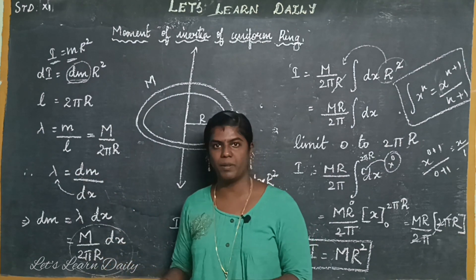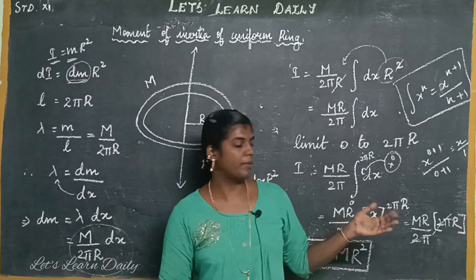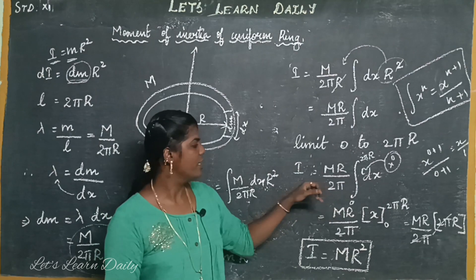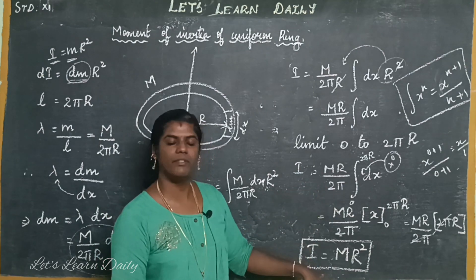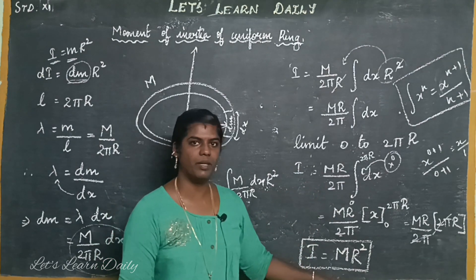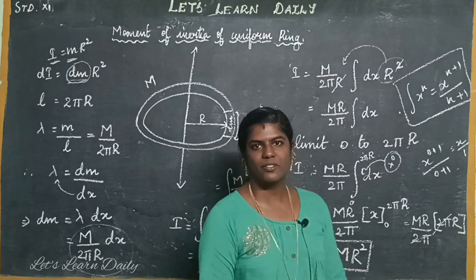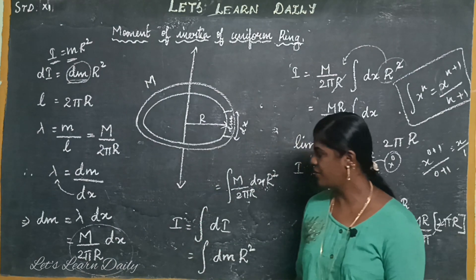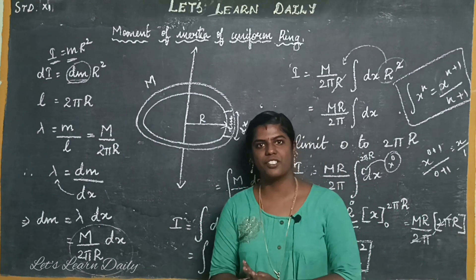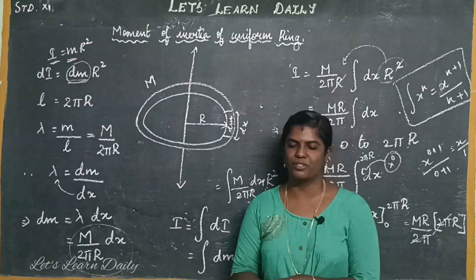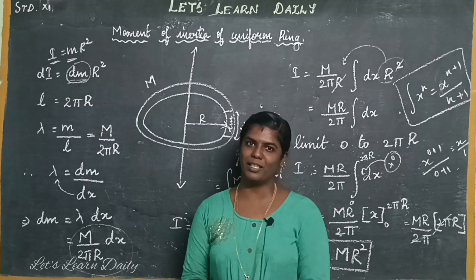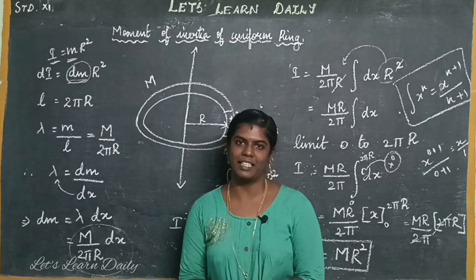The lambda values are multiplied by the integral value from 0 to 2πr. This is an important concept. Thank you!